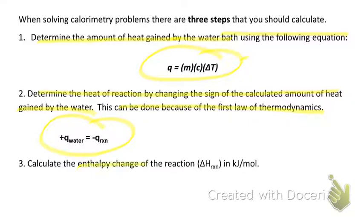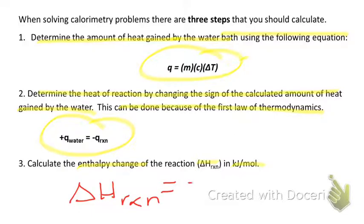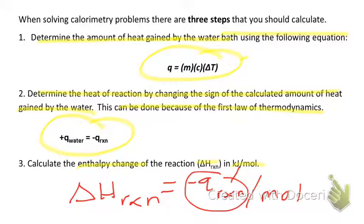Step three: calculate the enthalpy change of the reaction — delta H of the reaction — with units of kilojoules per mole. Always use kilojoules per mole. Delta H of the reaction equals the heat of the reaction divided by the moles. The heat of the reaction must be in kilojoules. Take the heat of the reaction from step two and divide by the number of moles in the reaction to find delta H.